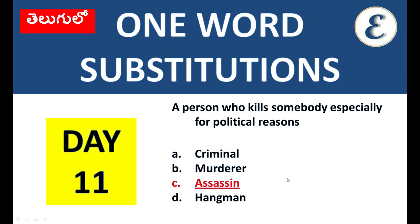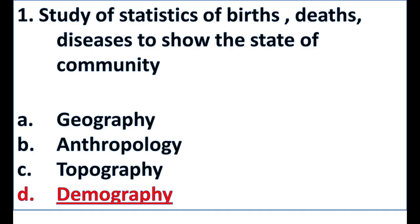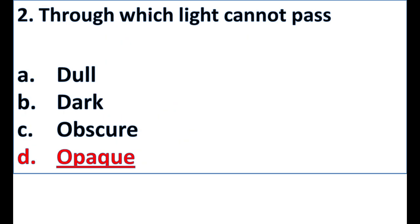One word substitution. First question: study of statistics of births, deaths, diseases to show the state of community. Options: geography, anthropology, topography, demography. Demography is the right answer.